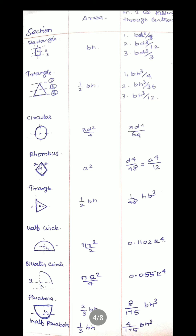This is a table for different types of sections showing their areas and moments of inertia. For a rectangle section: moment of inertia about the top is bd³/3, moment of inertia about the centroid is bd³/12, and moment of inertia about the base is bd³/3.